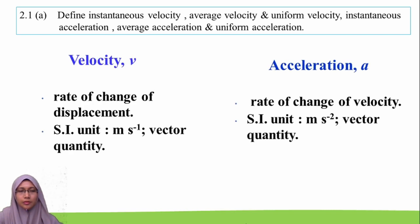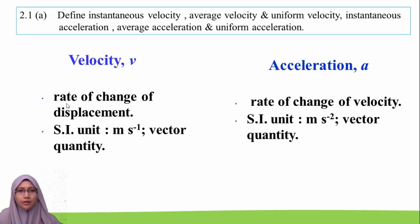For the next learning outcome, we are going to define instantaneous velocity, average velocity, uniform velocity, instantaneous acceleration, average acceleration, and uniform acceleration. Velocity is the rate of change of displacement and is a vector quantity. Acceleration is the rate of change of velocity with SI unit metres per second squared, and it is also a vector quantity.